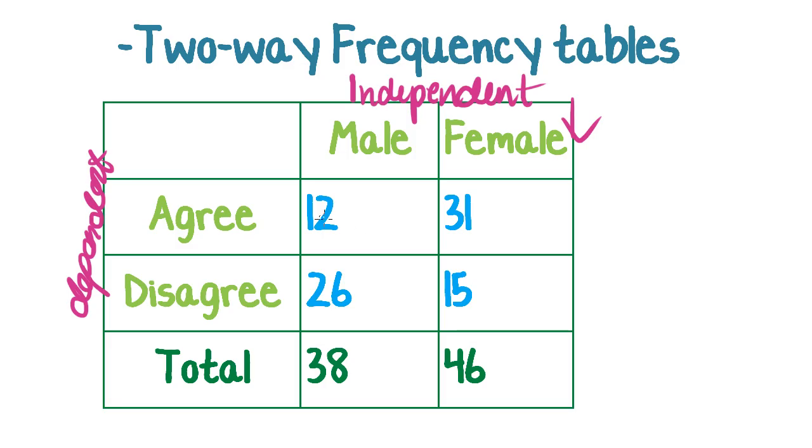So, what I'm trying to find is 12 as a percentage of 38, and 26 as a percentage of 38, and then 31 as a percentage of 46, and 15 as a percentage of 46. So, we do 12 divided by 38 times 100 to get that percentage, and we do 26 divided by 38 times 100 to get this one down here, and we'll have 31 divided by 46 times 100, and 15 divided by 46 times 100.